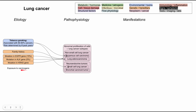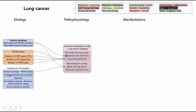Exposure to carcinogens outside of tobacco smoking can also predispose you to lung cancer. One occupational hazard is uranium — in miners, exposure to radon decay predisposes to small cell lung cancer. Other carcinogens include passive smoking (secondhand smoke), asbestos exposure, and occupational exposure to arsenic, chromium, nickel, beryllium, and silica — sometimes found in manufacturing or material science industries — as well as environmental air pollution.